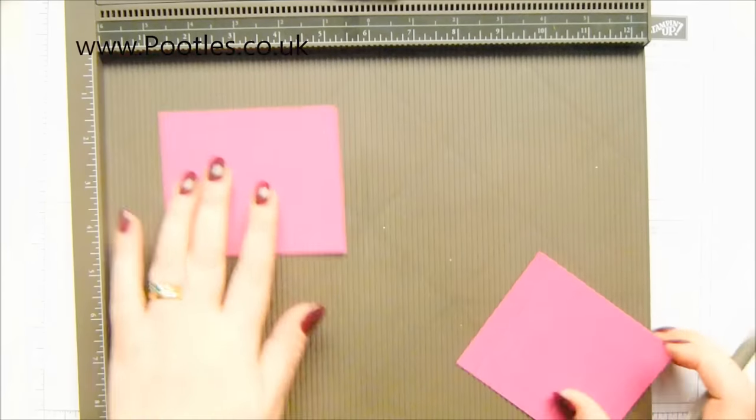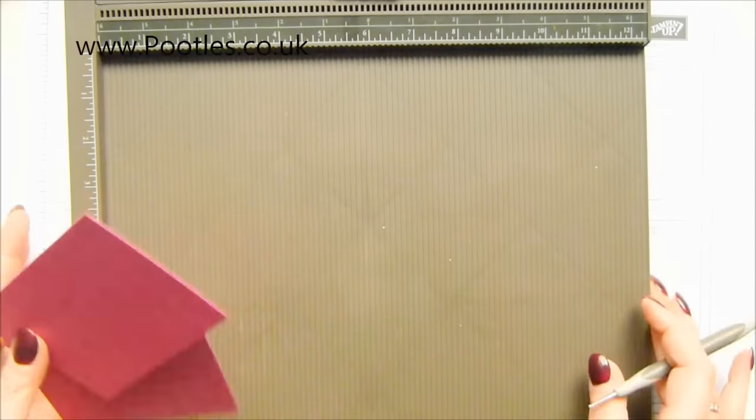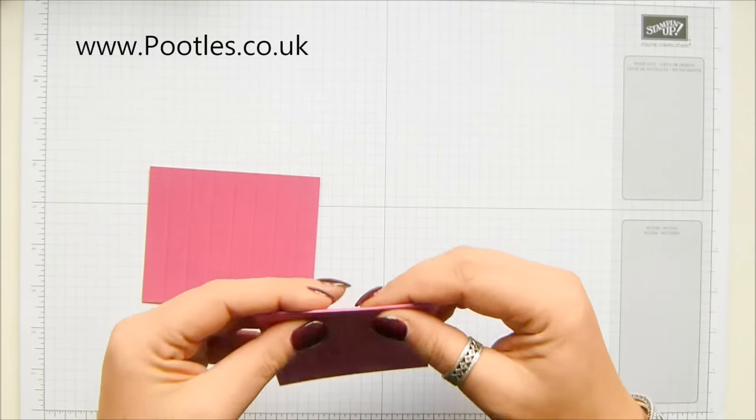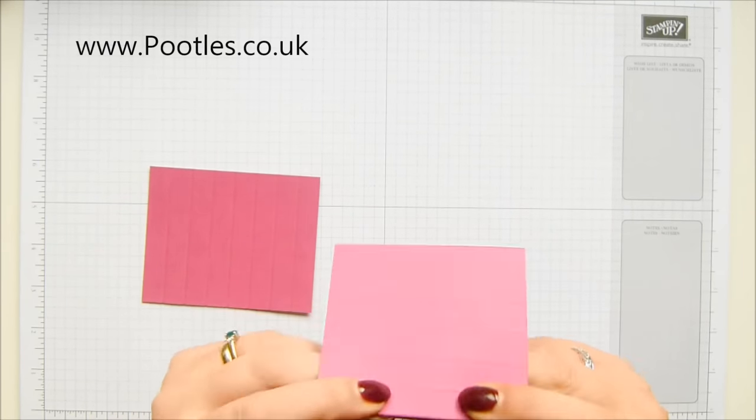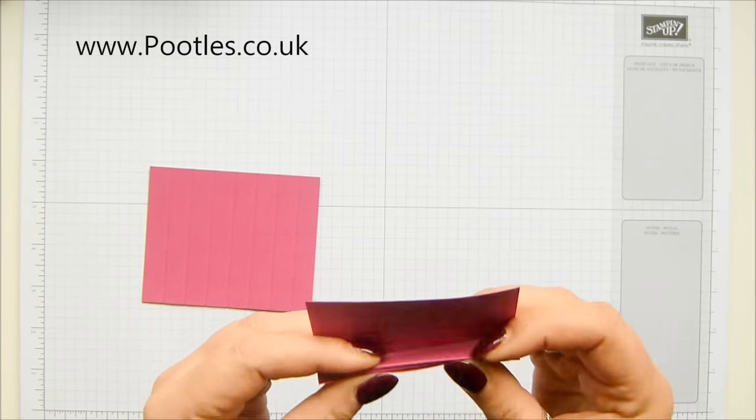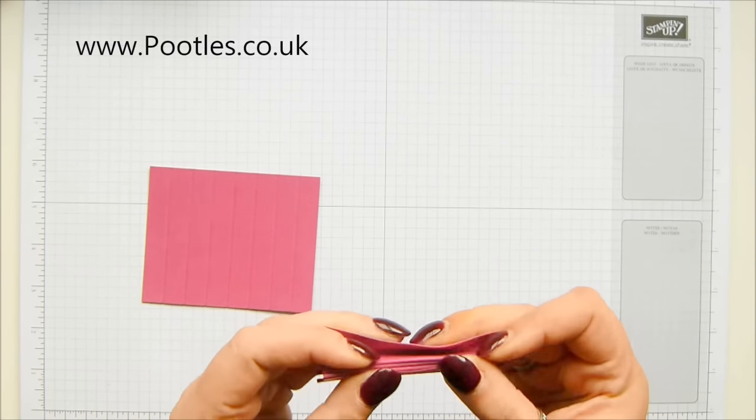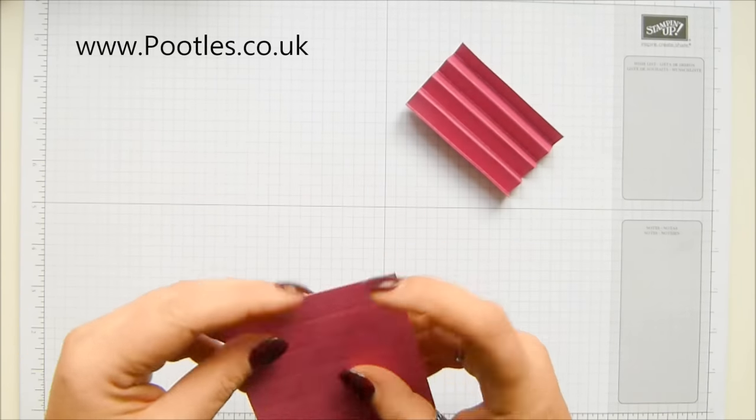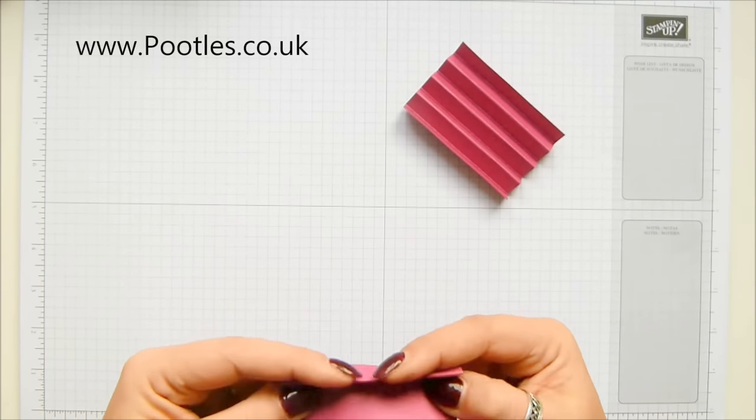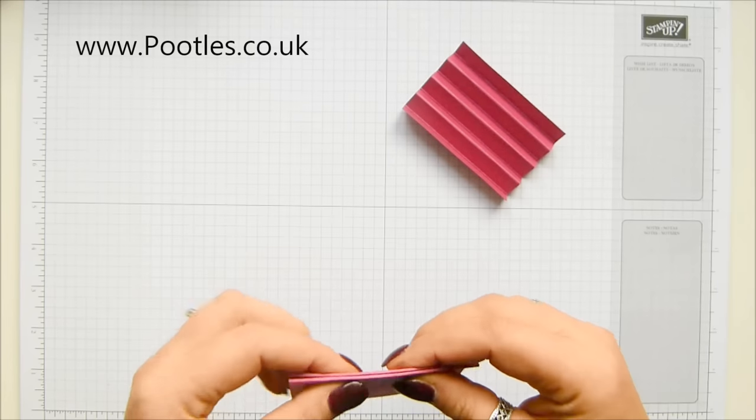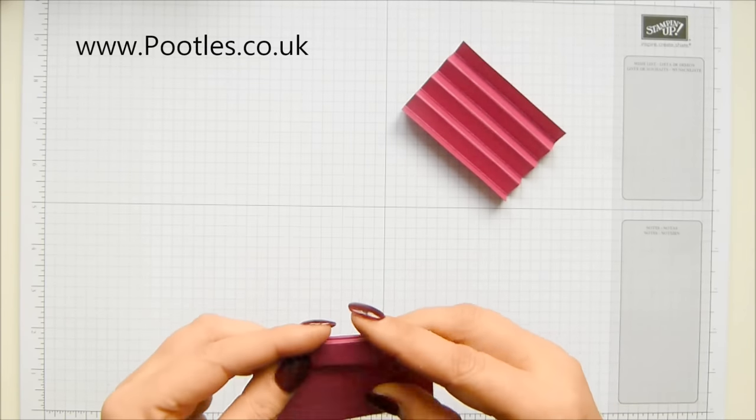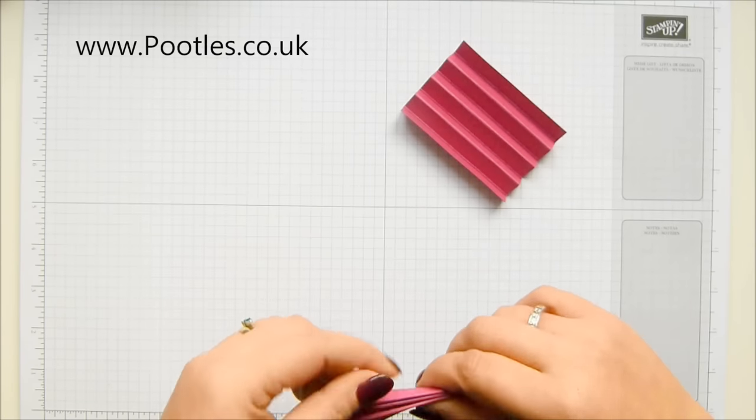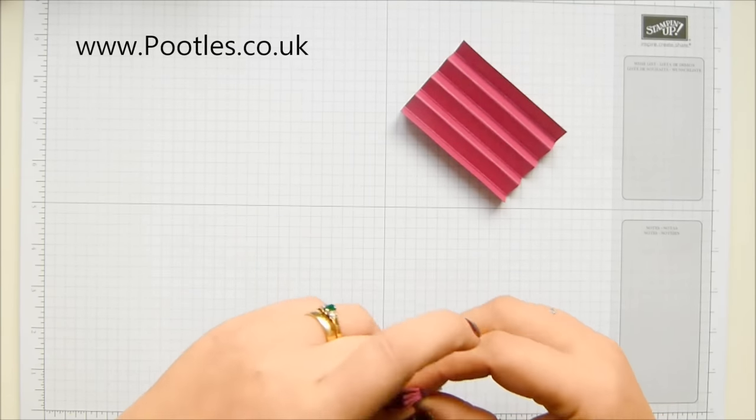Every half inch or every one centimeter. We don't need to go crazy on the burnishing because we do want this to pop open a little bit, but you need to concertina it like that. Super easy. You know me, I don't do complicated. She says, looking to her left and knowing what video is coming out next week. It's not complicated, it just looks complicated.